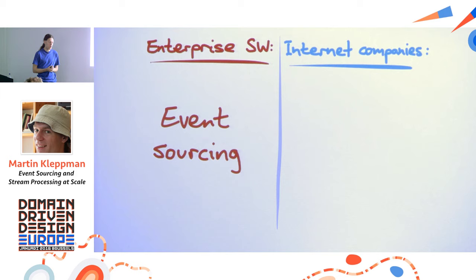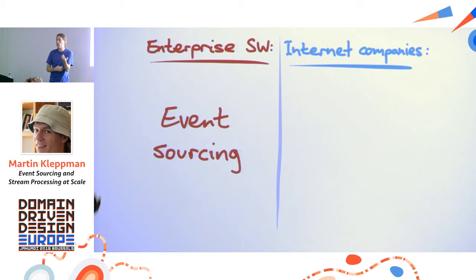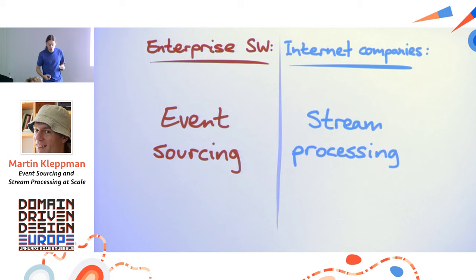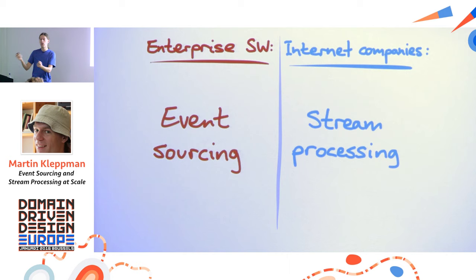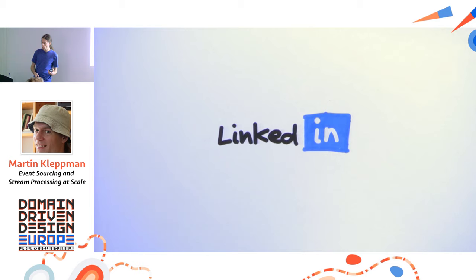In DDD, event sourcing structures data by describing system state not as mutations to a mutable store, but as a sequence of immutable changes. On the internet company side, stream processing systems also deal with sequences of immutable events. I'd like to illustrate examples from stream processing, show some parallels, and see what we can learn from each other — bringing something from the internet infrastructure side, while also learning from DDD.